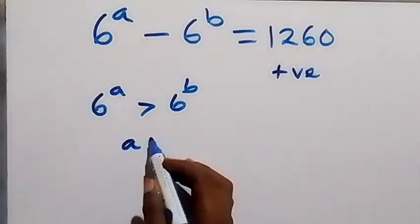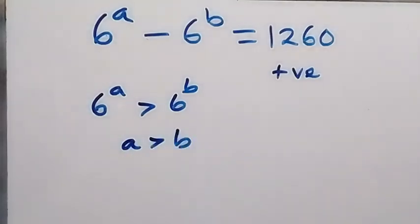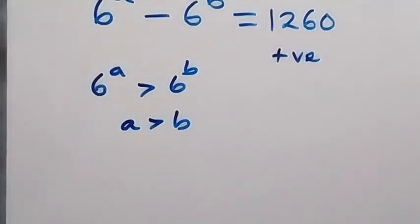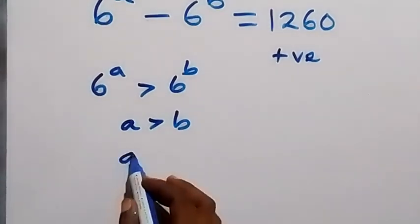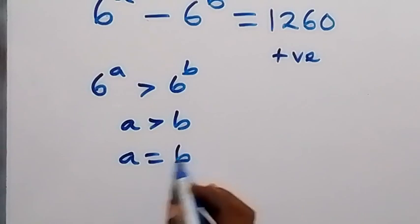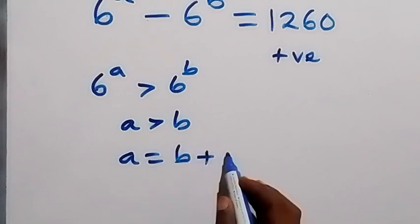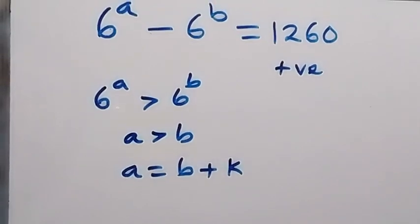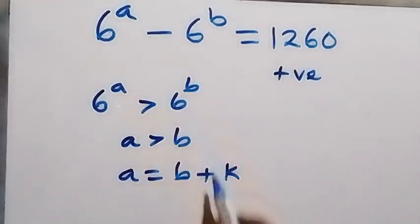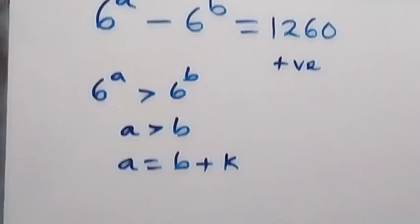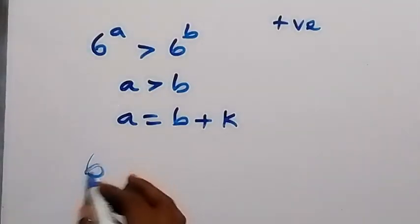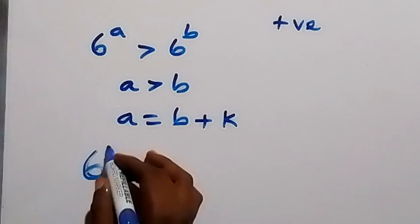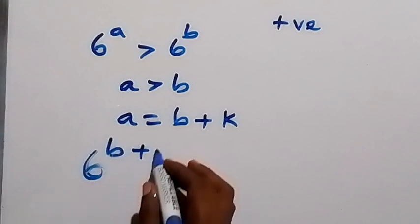If 6^a is greater than 6^b, it implies that a is greater than b. That means a can be written as b plus some number, which we represent as k. So a equals b plus k. We can now rewrite the equation in terms of b and k, giving us 6 raised to power (b + k) instead of a.